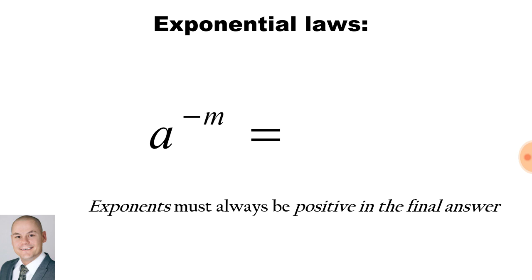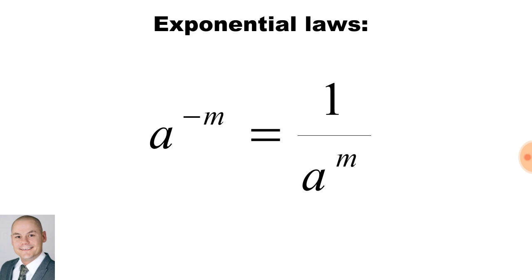In terms of exponential laws, exponents must always be positive in the final answer. Here we have the base a to the exponent of minus m. In order to make this positive we create a fraction and take the base a below the line. Therefore it would be 1 over the base a to the exponent of m.